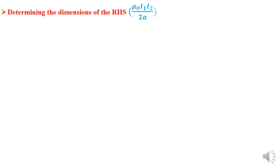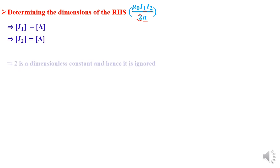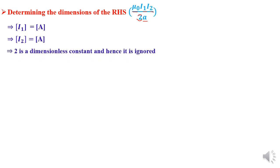Now let's determine the dimensions of the right-hand side, given by μ₀I₁I₂ all over 2A. We need the dimensions of μ₀, I₁, I₂, and A. Remember that 2 is a constant and is dimensionless, so it is ignored. Current has dimensions capital A, so I₁ and I₂ both have dimensions capital A. The distance A between the conductors has dimensions capital L.